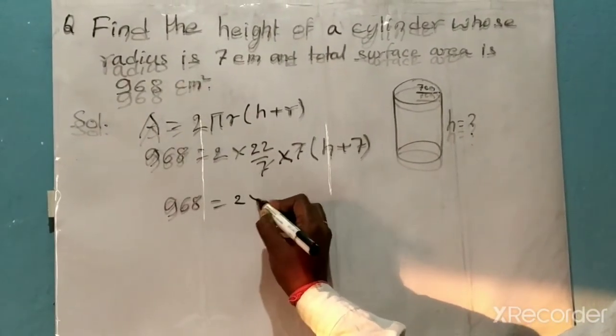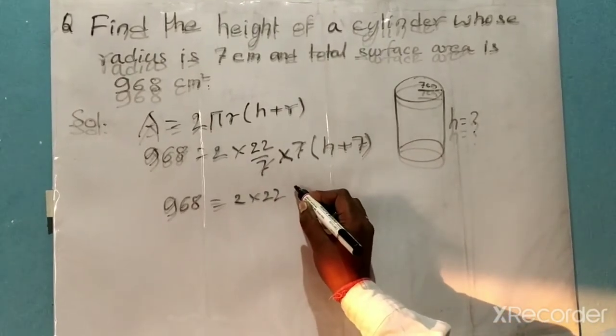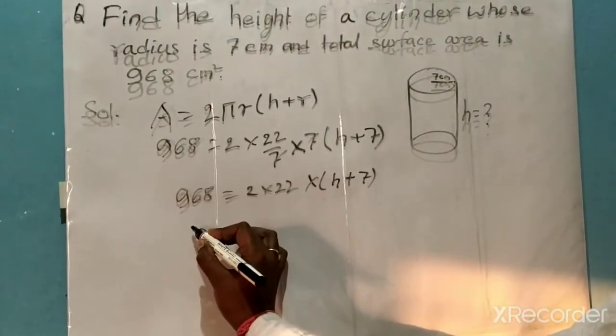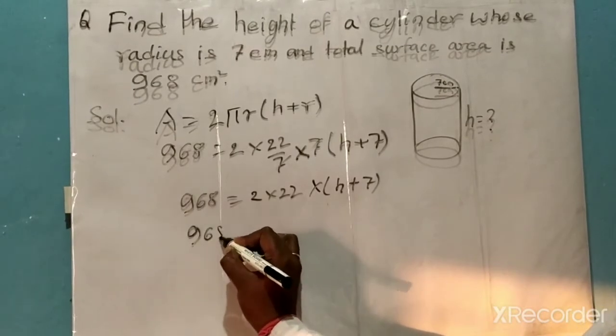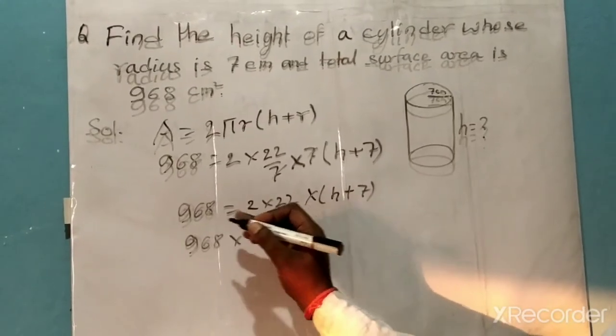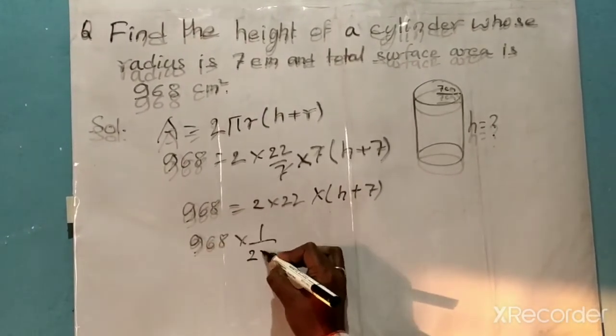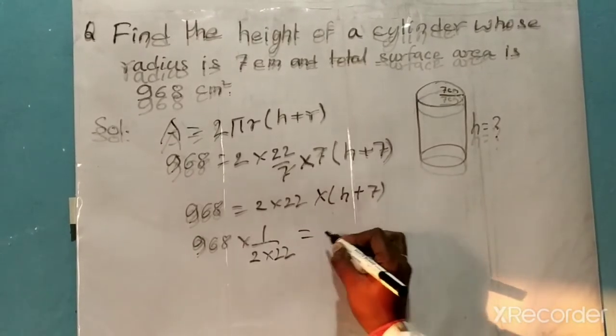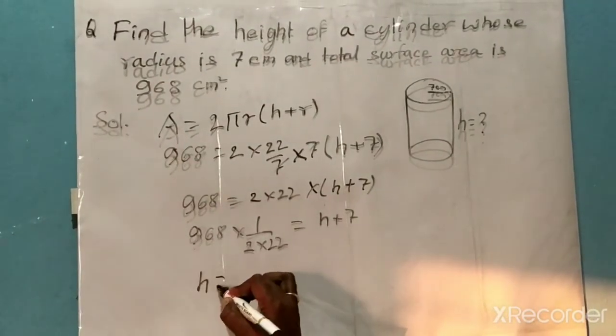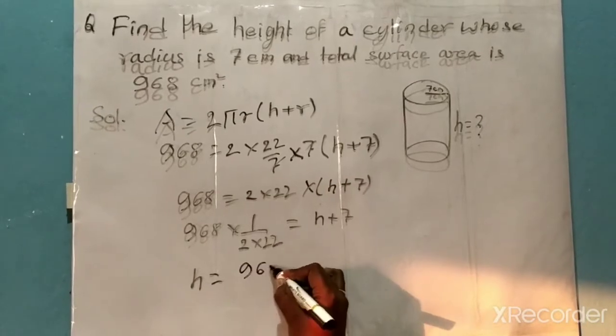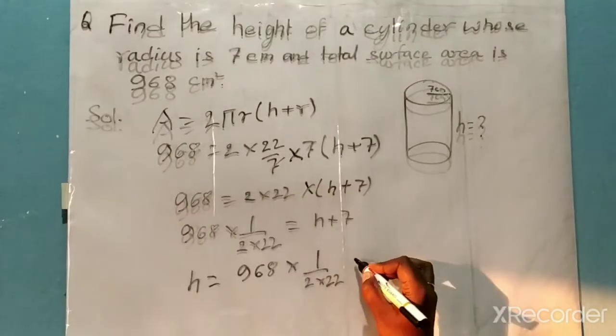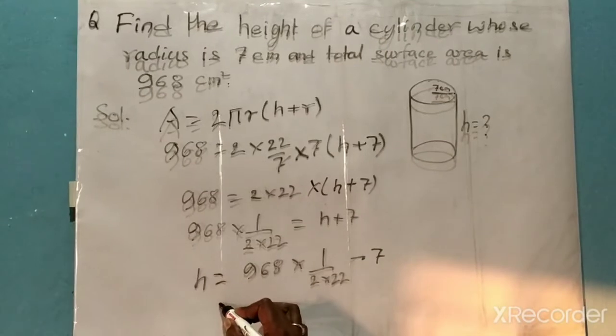So 968 = 2 × 22 × (h + 7). Moving the multiplied terms to the other side: 968 ÷ (2 × 22) = h + 7. Therefore, h = 968 ÷ (2 × 22) - 7.